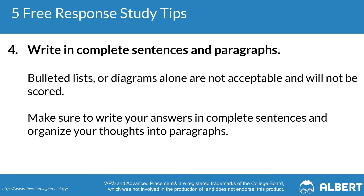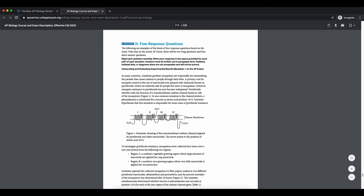Tip four is to make sure that you are writing in complete sentences and paragraphs. The instructions for the AP Biology free response section explicitly state that anything that is just bulleted is not going to be scored by the graders. Outlines, bulleted lists, and diagrams alone are not enough to be graded for the FRQs. So it's super important that you are always answering in complete sentences for both the longer questions and the short answer questions.